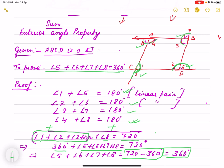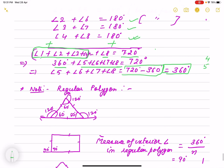So any polygon, whether you take 4 sides, 5 sides or that, sum of exterior angle is 360.